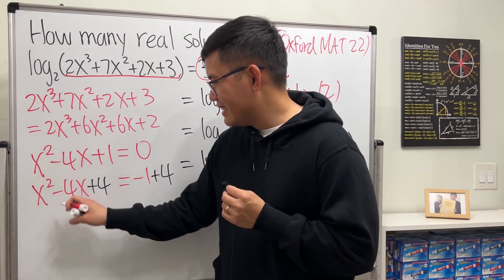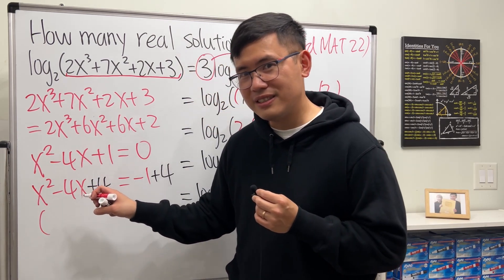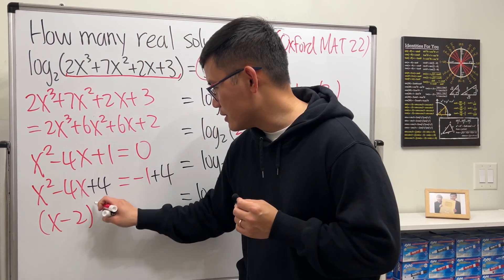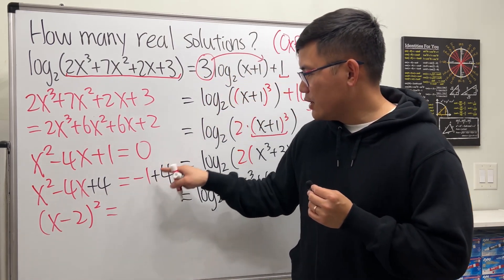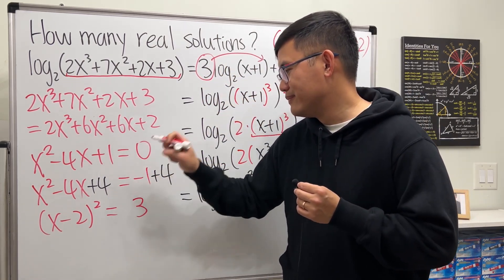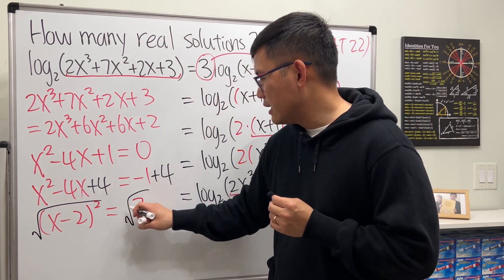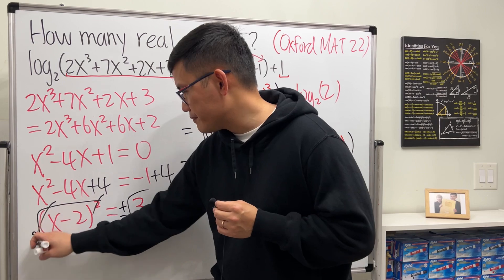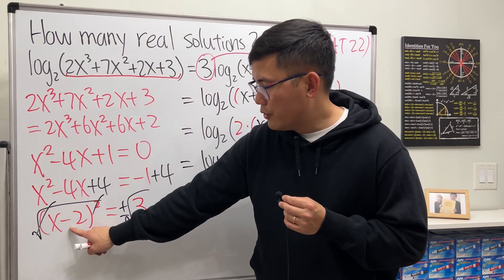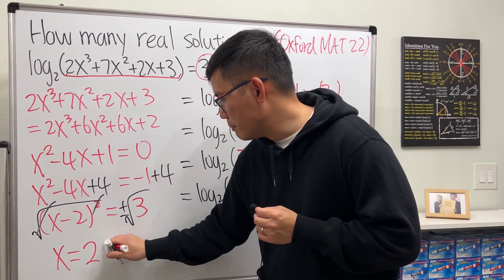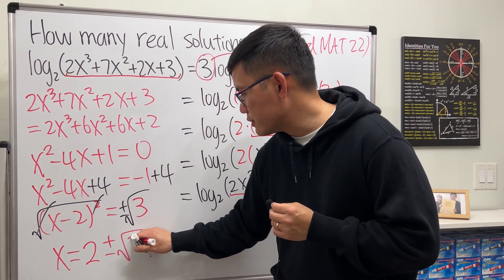To finish this, factor it: we get (x - 2)(x - 2), so (x - 2)². -1 + 4, I believe that's 3. Then just take the square root on both sides, don't forget the plus minus. Then move the 2 to the right hand side, we get x = 2 ± √3.